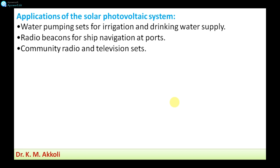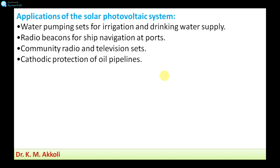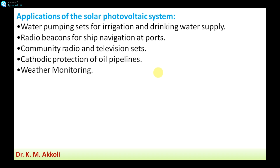Another application is community radio and television sets. For certain communities, direct electricity from solar energy can power community radio and television. Additionally, solar photovoltaic systems are used for cathodic protection of oil pipelines — pipelines can corrode over time and cease to function, so protection must be provided, and this can be done using solar energy.